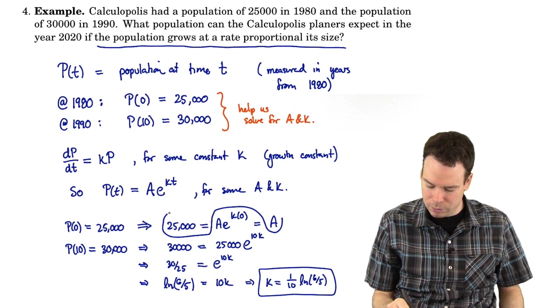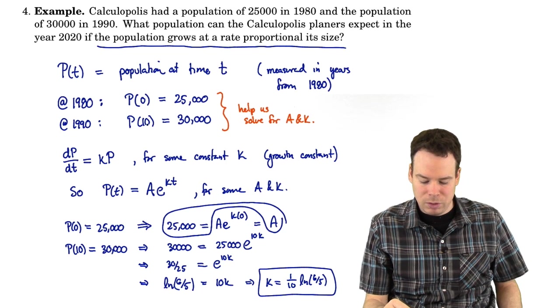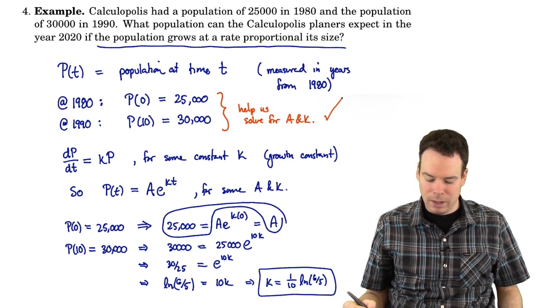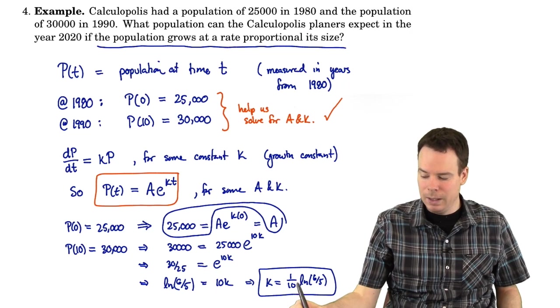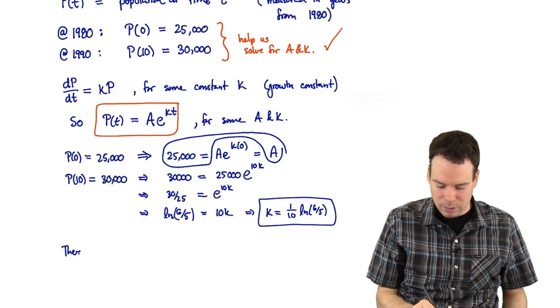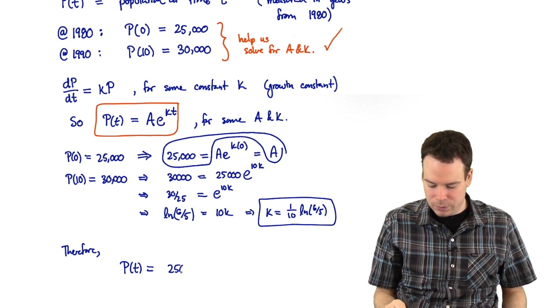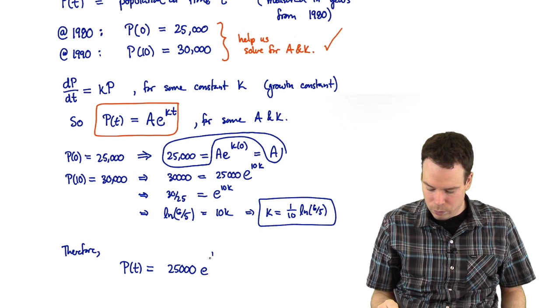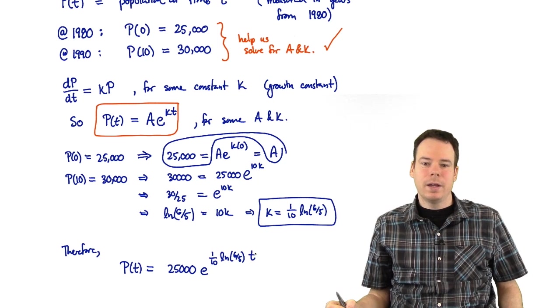So there's k. We also have our value of A. So using that information about time zero and time 10, that's helped us to solve for A and k. We've now done that. We've got the values of A and k. We have the form of the function. We know the values of A and k. So we can write down explicitly what the population function is. Therefore, P of t is 25,000 times e to the one tenth ln of 6 fifths times t. And so there's our population function. Notice we've got a function now of time alone.